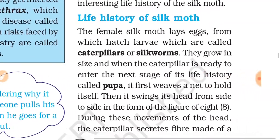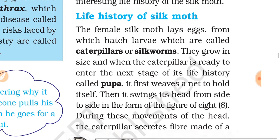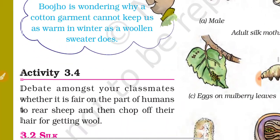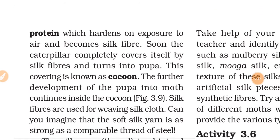The female silk moth lays eggs from which hatch larvae which are called caterpillars or silkworms. They grow in size, and when the caterpillar is ready to enter the next stage of its life history called pupa, it first weaves a net to hold itself, then swings its head from side to side in the form of a figure of eight. During these movements, the caterpillar secretes fiber made of a protein which hardens on exposure to air and becomes silk fiber.